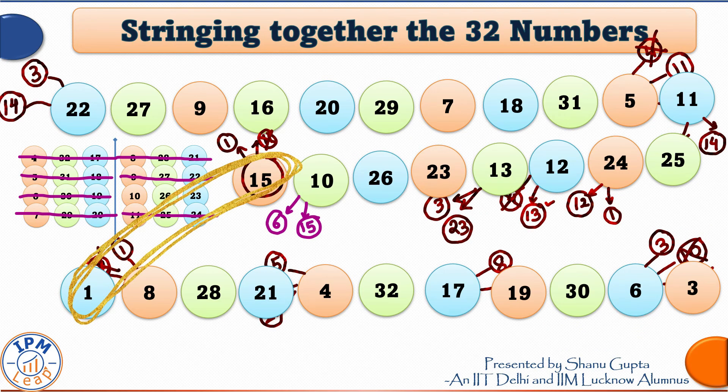Now, 3, the last number in the string, can be followed only by 13. See for yourself. All other possibilities are ruled out. So, that's it. Let me string together the numbers 3 and 13. Our string gets broken at this point.